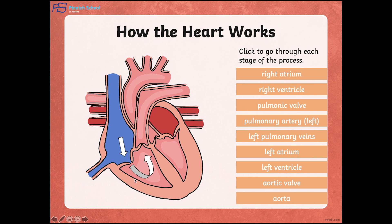The right ventricle then contracts, pushing the blood through the pulmonary valve to the pulmonary artery. The pulmonary artery then carries the de-oxygenated blood to the lungs for oxygenation.